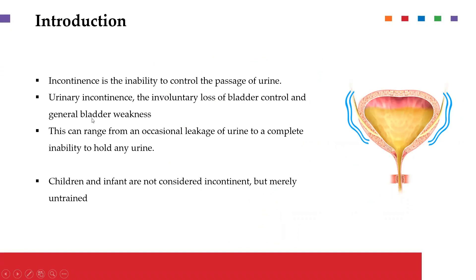Incontinence is basically the inability to control the passage of urine. If you cannot control how you release or hold urine, that leads to the condition we call urinary incontinence — the involuntary loss of bladder control. Ordinarily we have control of when we want to empty our bladder, and when we lose that ability, we have urinary incontinence. This can range from a small leakage all the way to a total lack of ability to hold any urine.